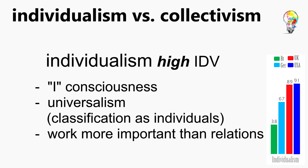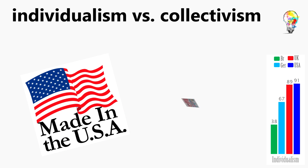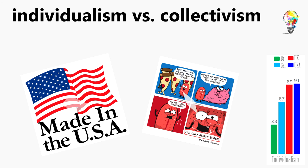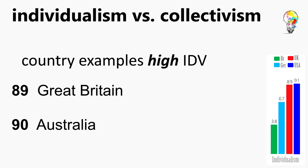Societies with a high IDV score, on the other hand, have an I-consciousness and therefore a self-orientation. They classify others as individuals and tasks are more important than relations. An example is the people from the United States, who only prefer made-in-USA products when the quality is better and see eating as a personal pleasure. Personal accomplishments are important. Representative countries are Australia with a score of 90 and Britain with a score of 89.